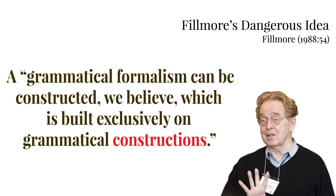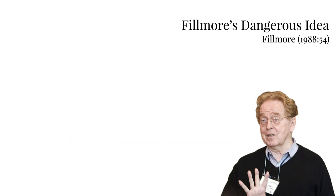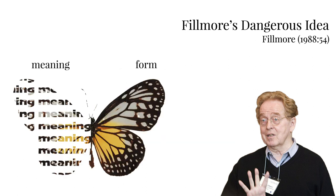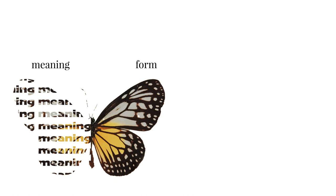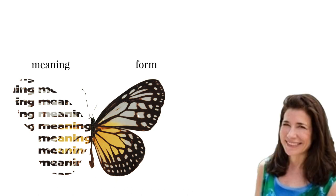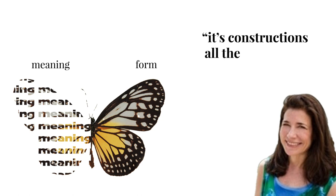In this video series we will explore in detail what constructions are, but for the time being we will simply say that a construction is any conventionalized mapping between some meaning and some form. The simplest constructions are words, such as 'butterfly', but as we will see later, even the grammar of a language can be described as pairings of meaning and form, so in order to learn a language a language user simply needs to learn the constructions that language uses. Or, as Adele Goldberg — one of the leading scholars in construction grammar — has described it: 'It's constructions all the way down.'